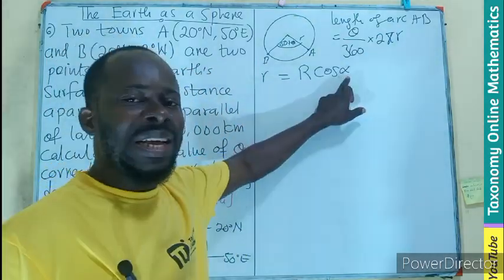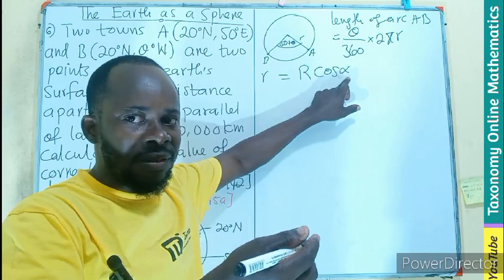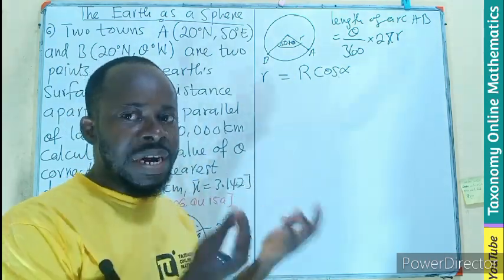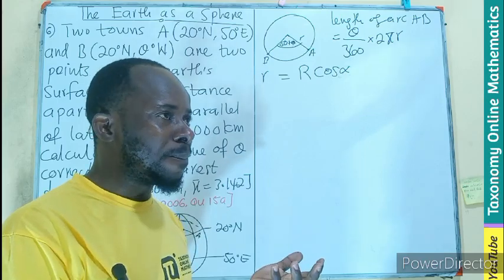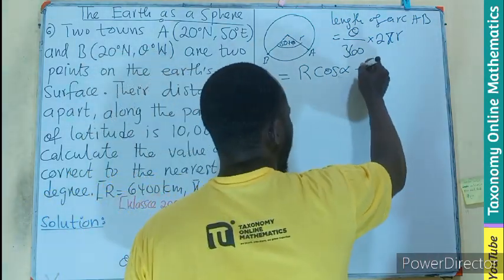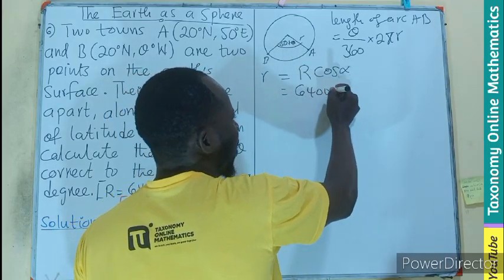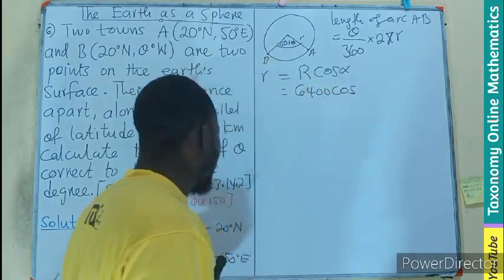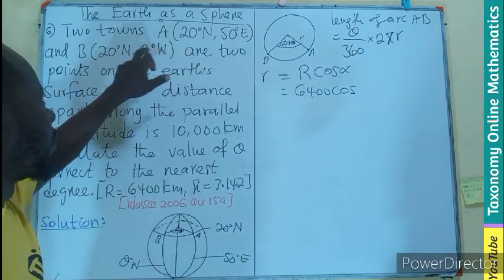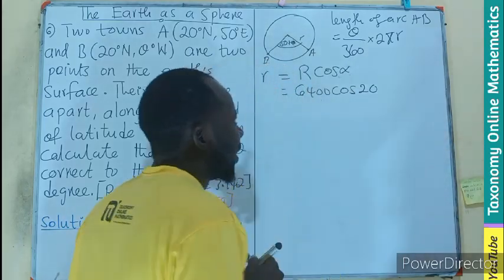Then the radius is also going to be the radius of the earth times the cosine of the common latitude. So what I mean is that our r is going to be capital R cos α. And this alpha is the common latitude between the two places. Then the R is the radius of the earth. So this will be 6,400 times the cosine of the common latitude 20 degrees north.